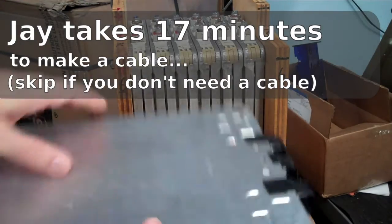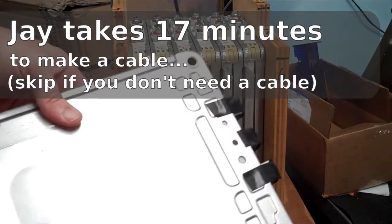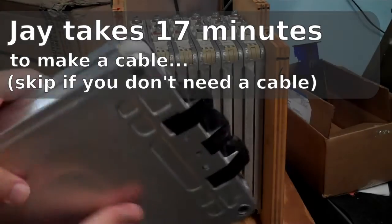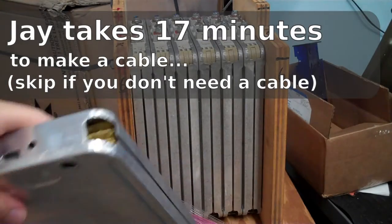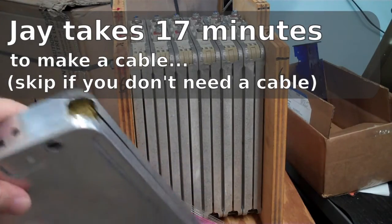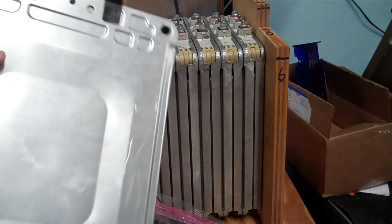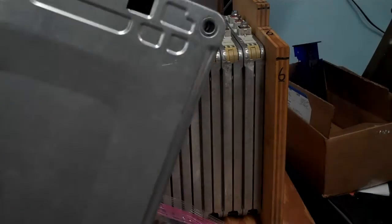This is a battery module from a 2013 Nissan LEAF. Inside there are four pouch cells, and these pouch cells are set up in a two-parallel, two-series configuration.